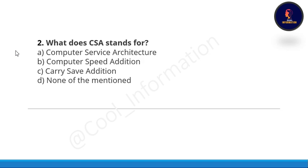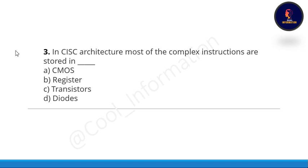Question number two: what does CSA stand for? Option A: Computer Service Architecture. Option B: Computer Speed Addition. Option C: Carries Same Addition. Option D: None of the above. The correct option is option B, which is Computer Speed Addition.